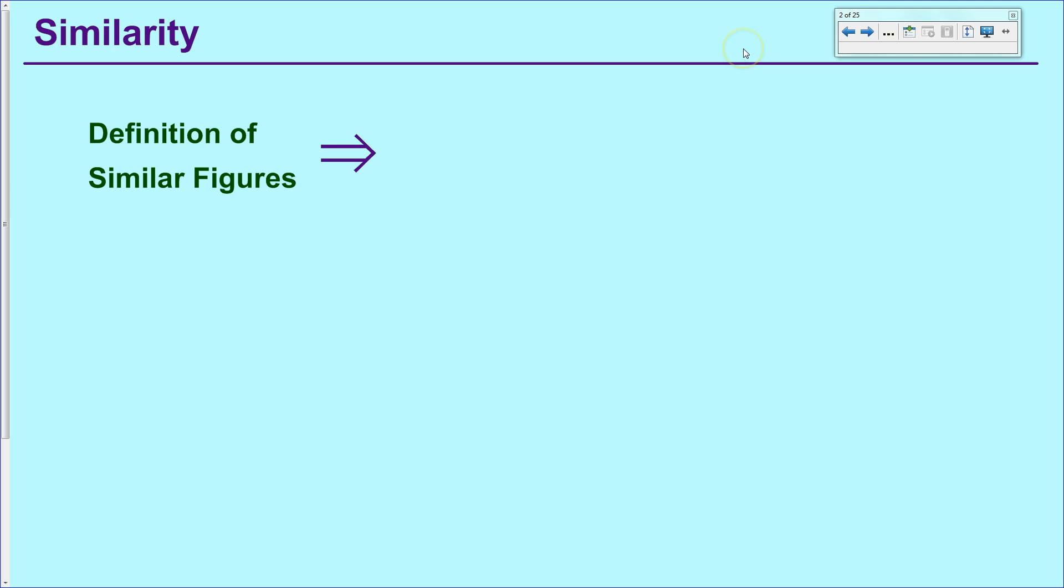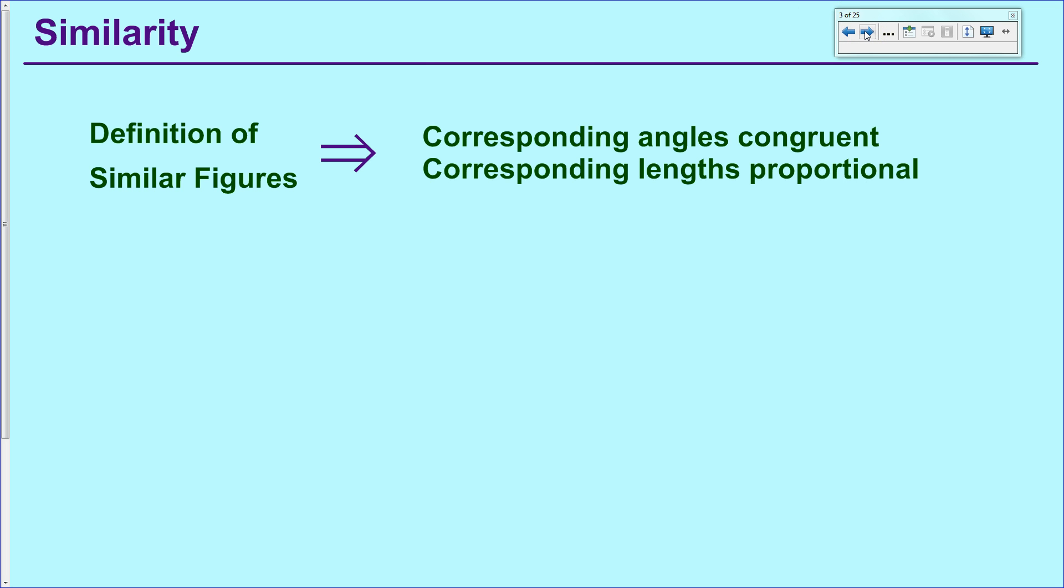To start off, I want to talk about similarity again. We had a definition of similar figures which basically said two things: one, all corresponding angles are congruent, and secondly, that all corresponding lengths are proportional.